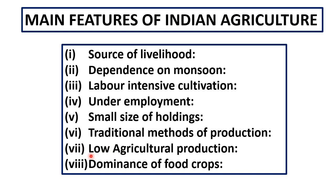Then, low agricultural production — as old techniques and methods are applied, production is also very low. And last but not least, dominance of food crops — most of the farmers are engaged in production of food crops, which is of subsistence type, meaning only for survival purpose, not for selling or developmental purpose. These are the main features of Indian agriculture.